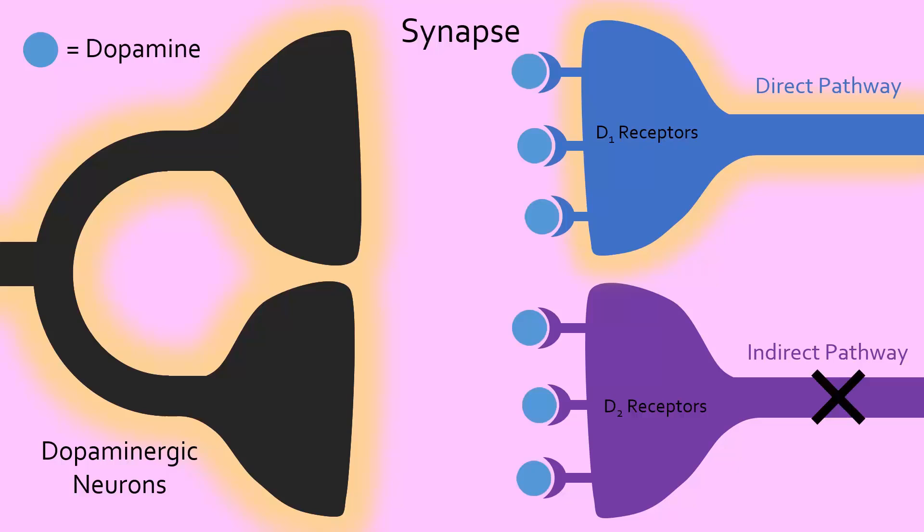This is just a taste of how complex the neuroscience in our brain is. One neurotransmitter can cause both excitatory and inhibitory effects just by binding to different receptors.